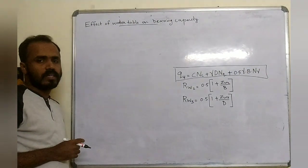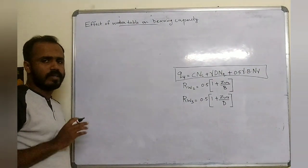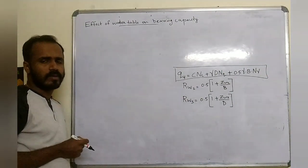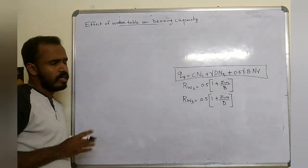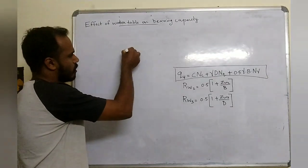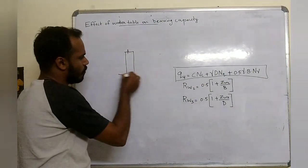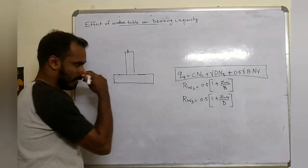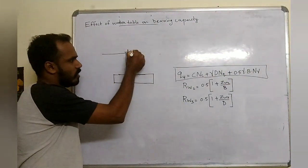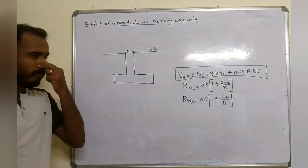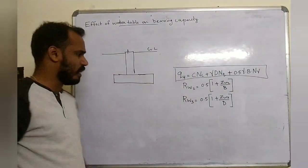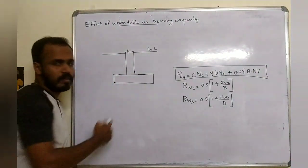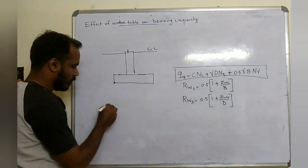What is the effect of water table on bearing capacity? We consider a strip footing. This is the strip footing, this is the ground level, and this is the water table. The first condition is when the water table is much below the base of the footing. We need to consider the water table and take the section 1-1.